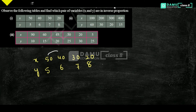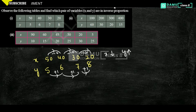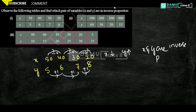From here to here, x is decreasing by minus 10 each time, so in this direction it is decreasing. And y is increasing by adding 1 each time. So continuously x is decreasing and y is increasing. If x is decreasing then y is increasing — both are in reverse. So x and y are in inverse proportion.